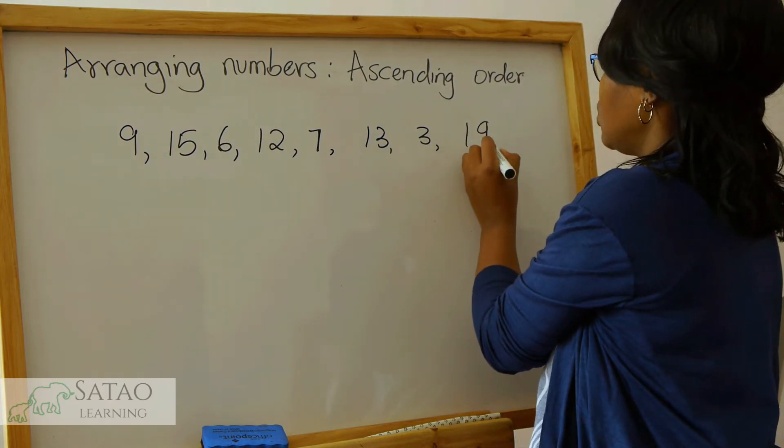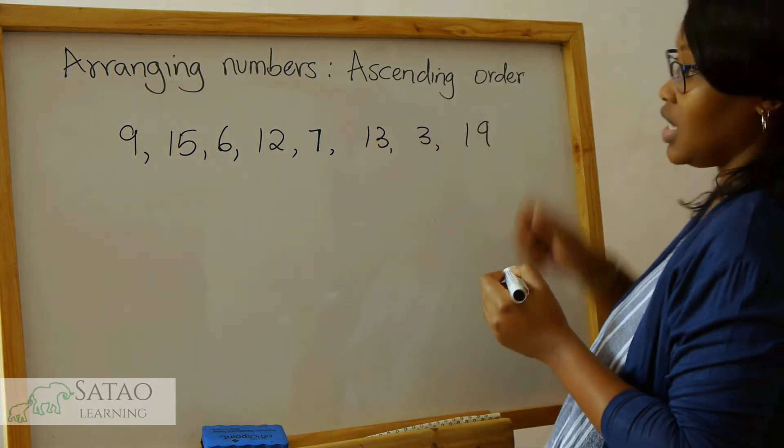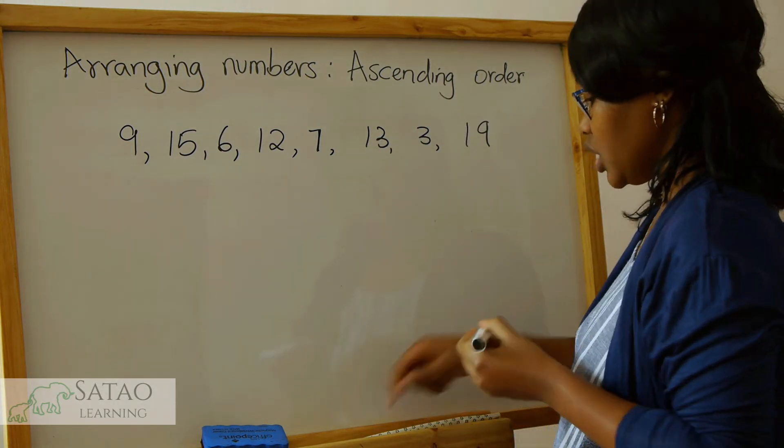So we are told to arrange these numbers in ascending order. What do we do?